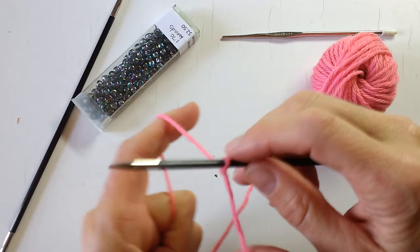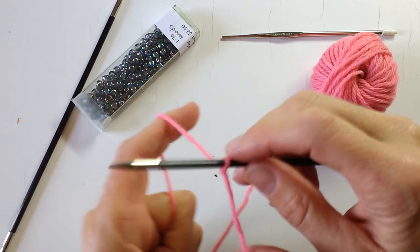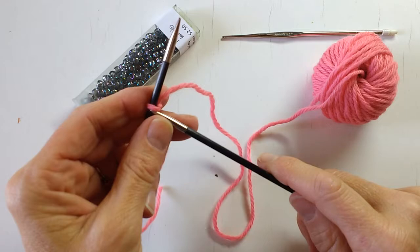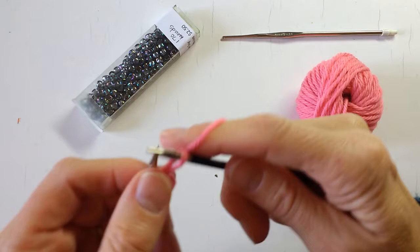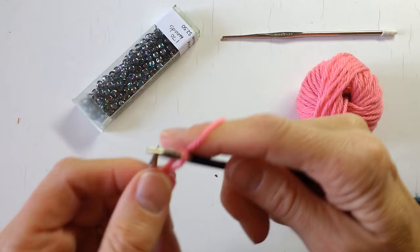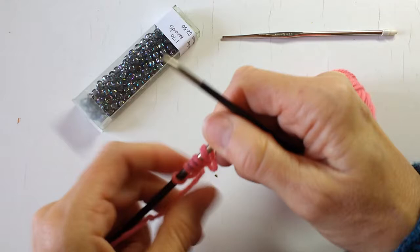Here we go, I'm going to put my slipknot on the needle and then I'm going to cast on five stitches. The slipknot counts as the first stitch. Two, three, four, five. So that's our setup for the beaded picot cast on.